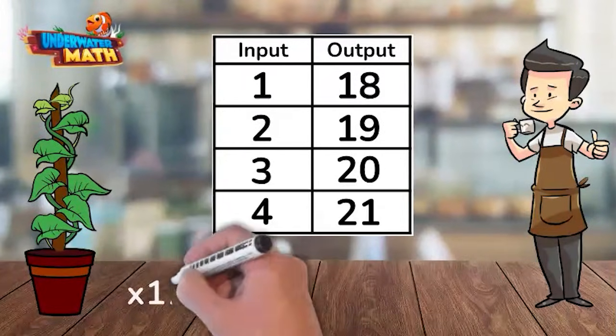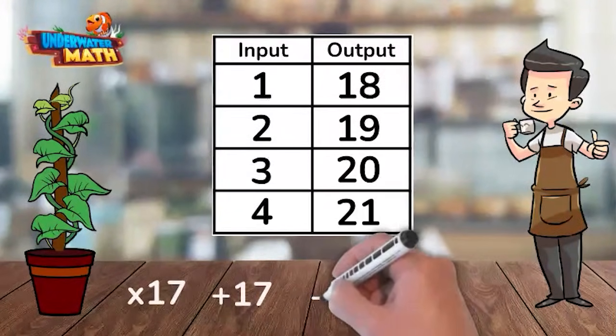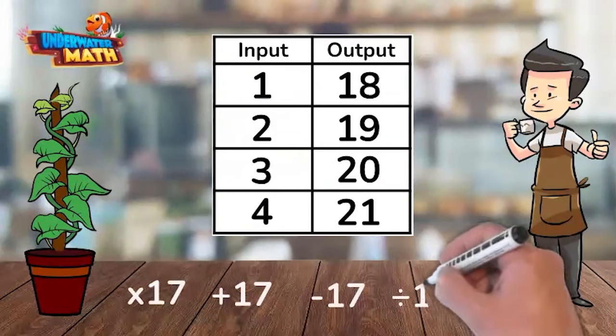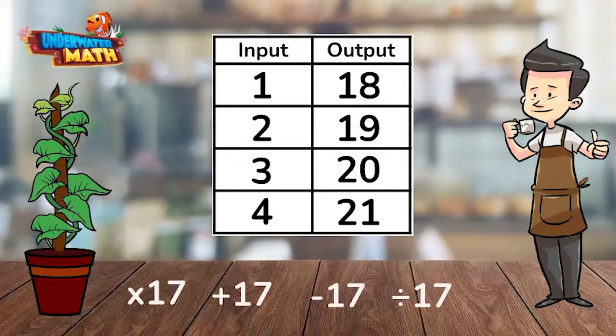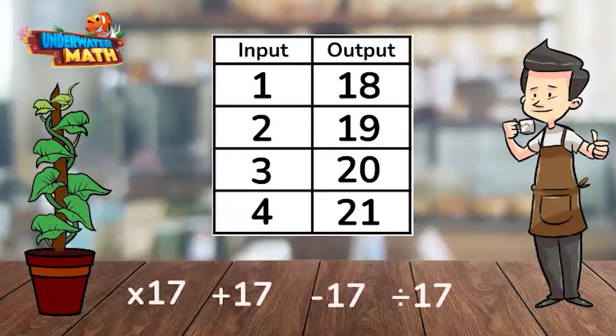Help me identify the rule to determine the output for our plant. Is the rule to multiply by 17, add 17, subtract 17, or divide by 17? Let's try the first one by applying the rule to the input to see if it makes the output. Is 1 times 17 equal to 18? No, so that can't be the rule.